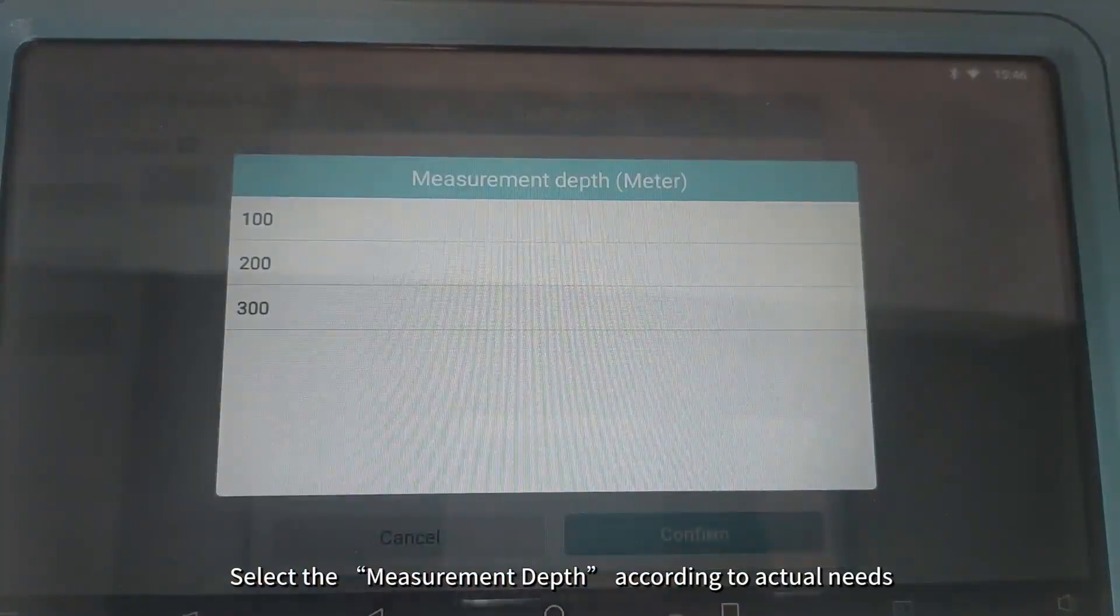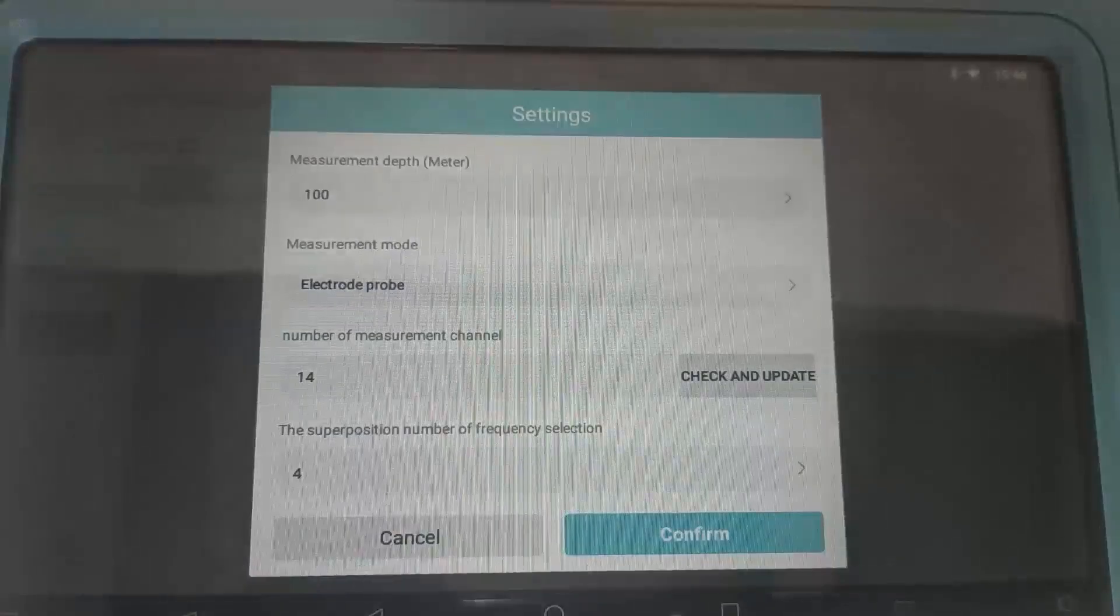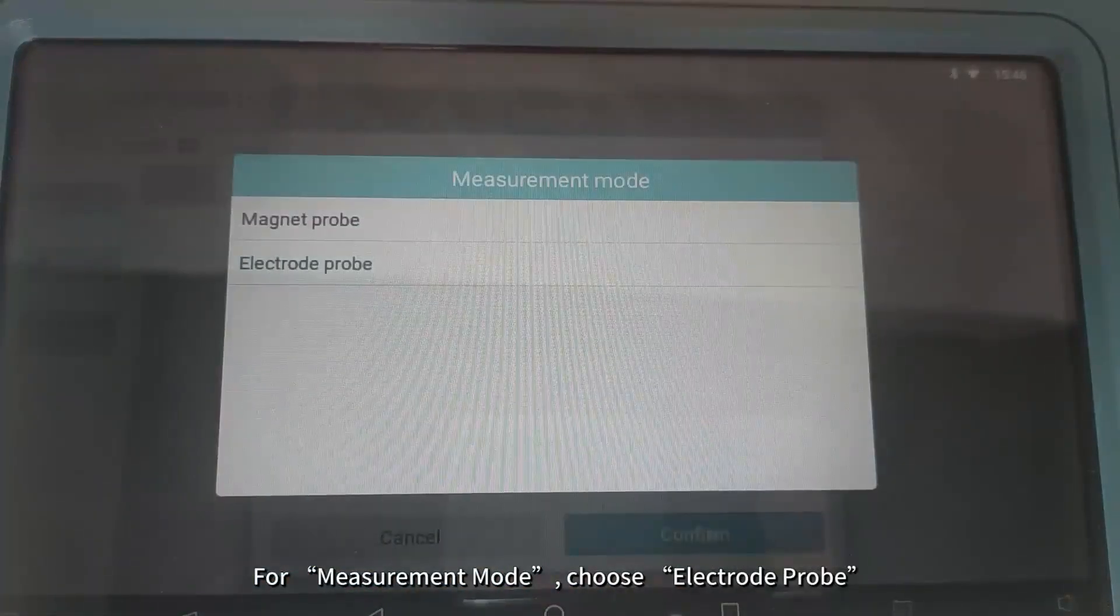Select the measurement depth according to actual needs. For Measurement Mode, choose Electrode Probe.